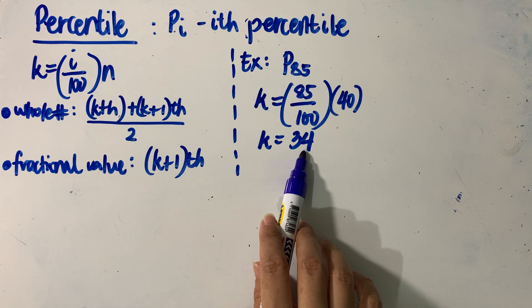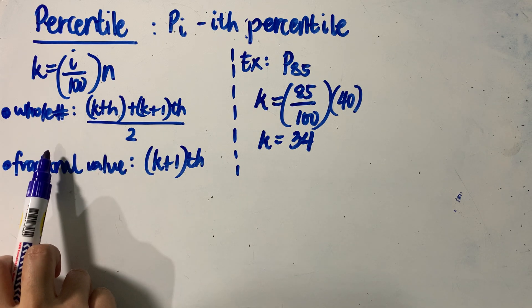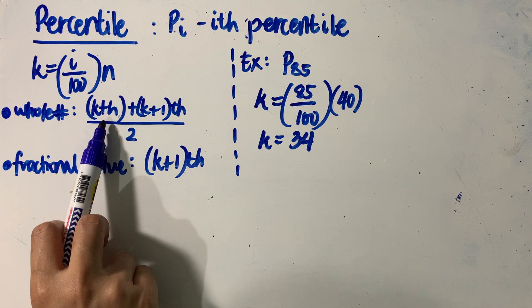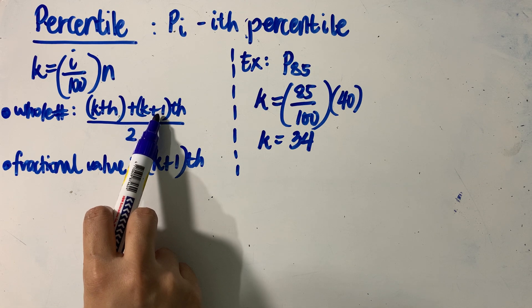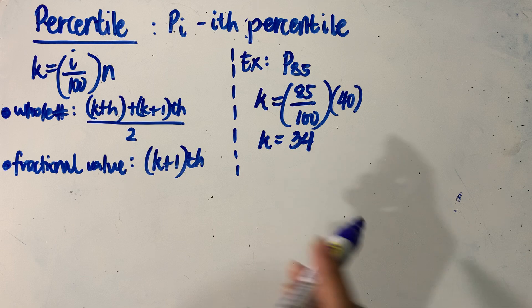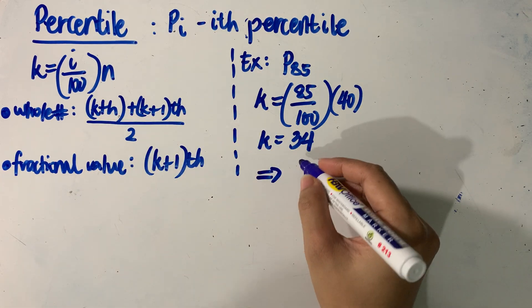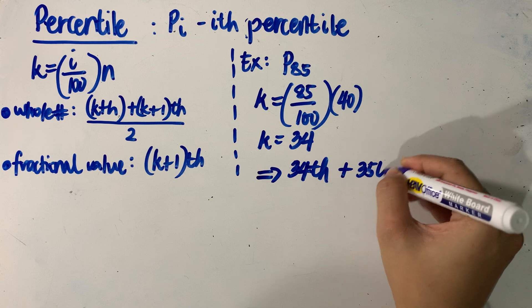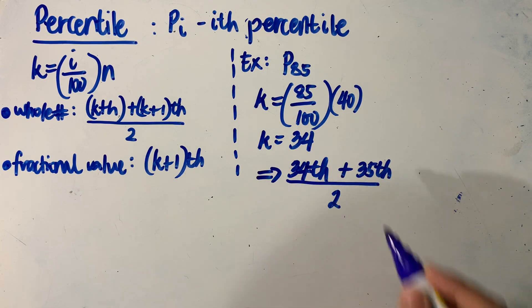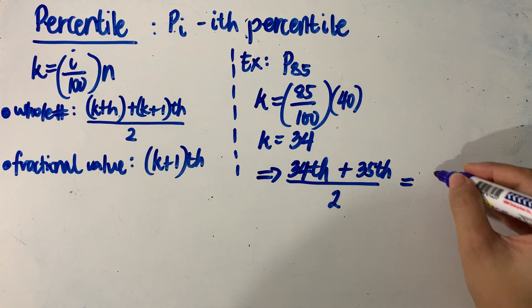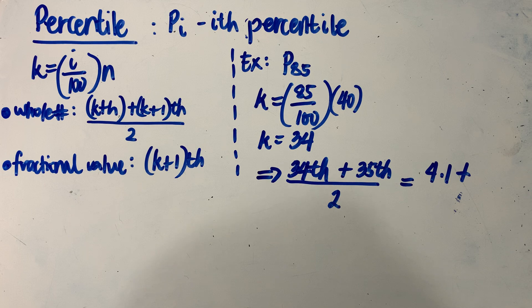Since our K is a whole number — which is 34 — we need to locate the 34th data value and the K plus 1, that is 34 plus 1, which indicates the 35th data value in our distribution. We add those two values and divide by 2. Going back to our data, the 34th data value is equal to 4.1, and the 35th data value is 4.2.